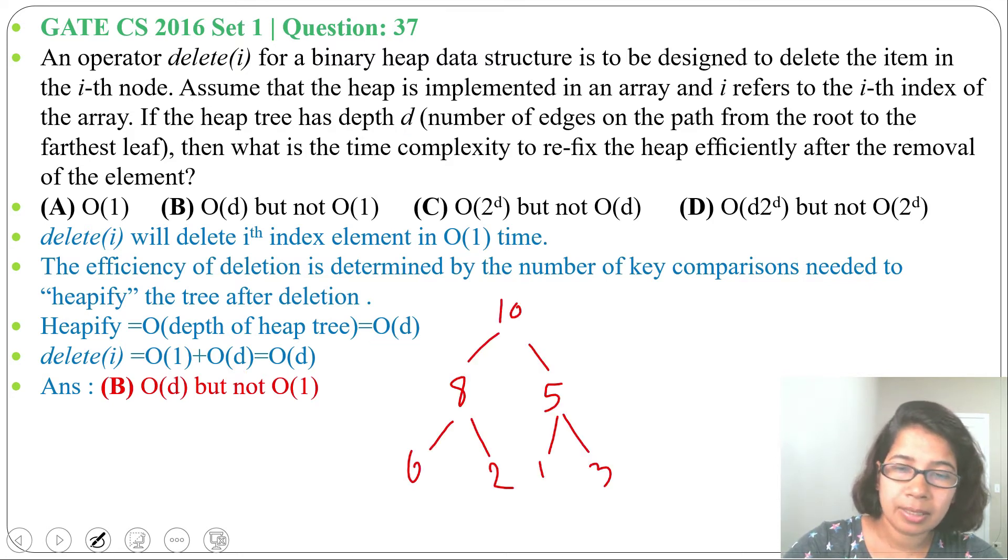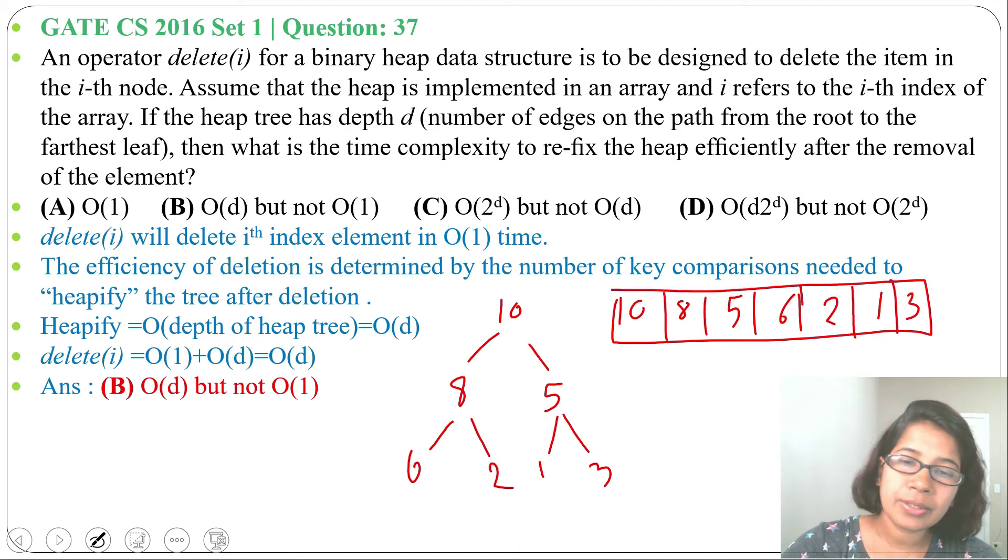Let this be the max heap. We can write it in array format like 10, 8, 5, 6, 2, 1, 3 in level order, and the index will start from 1, 2, 3, 4, 5, 6, 7. Suppose we want to delete the second element.